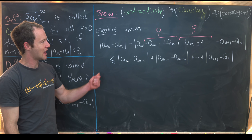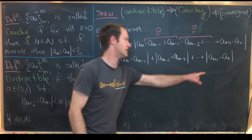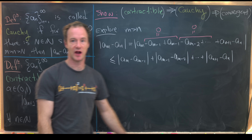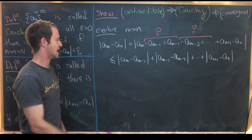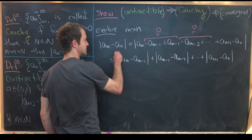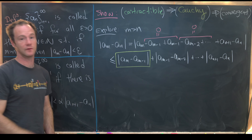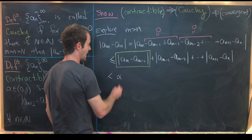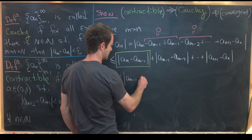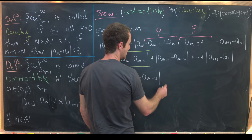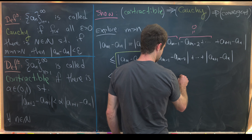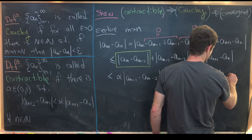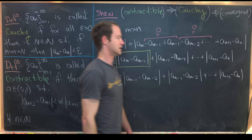We want to get all of these in terms of |a_{n+1} - a_n| by applying our contraction. Applying the contraction to the first term, it is strictly less than alpha times |a_{m-1} - a_{m-2}|, and then we have all the remaining terms |a_{m-1} - a_{m-2}| + … + |a_{n+1} - a_n| staying the same.